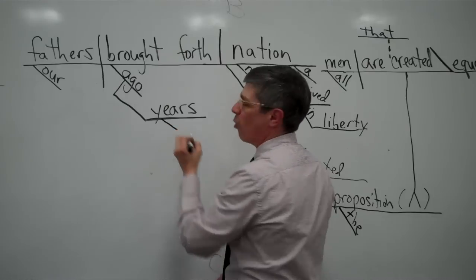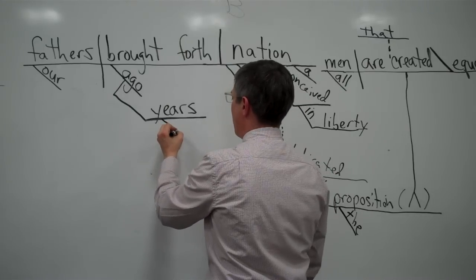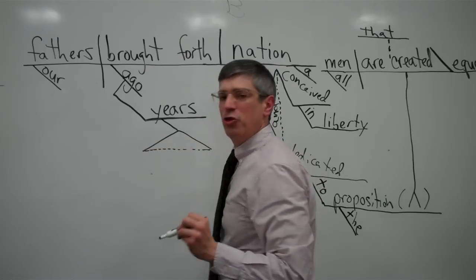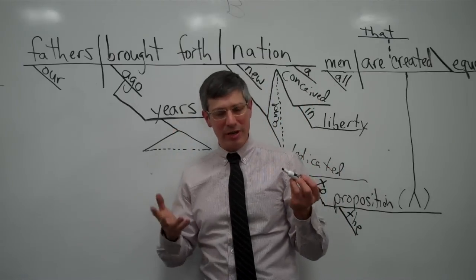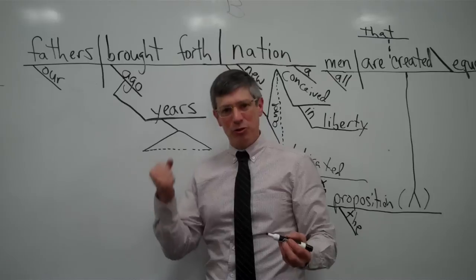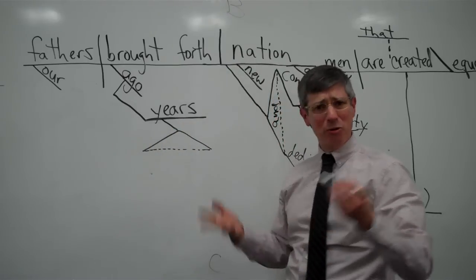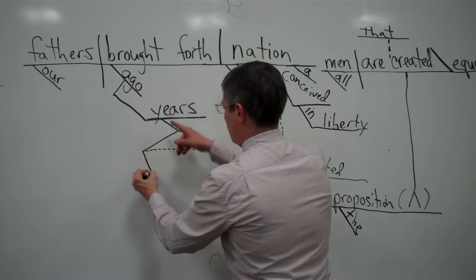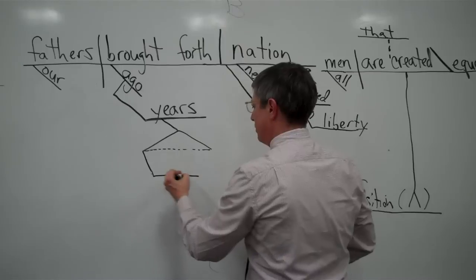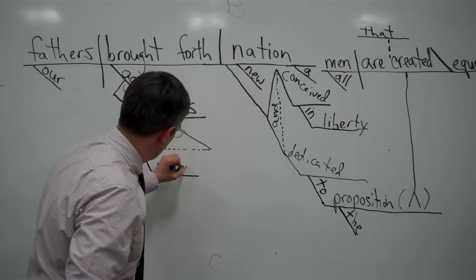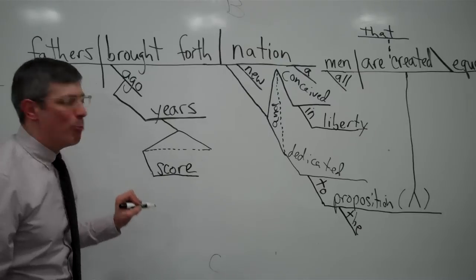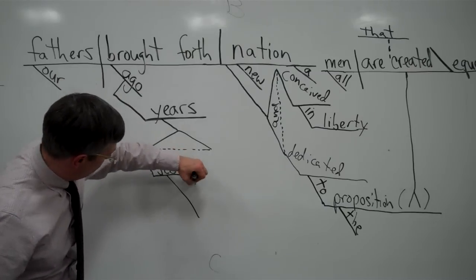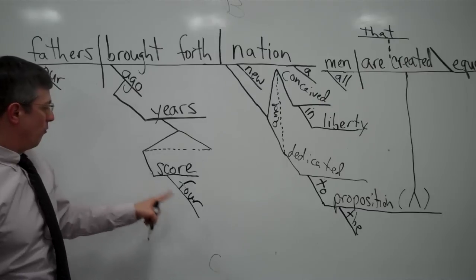What we would do something similar. What we did with years, we would make it horizontal for score. How many scores? Four score. How many years? How many scores? Four score. Four. So four score and.